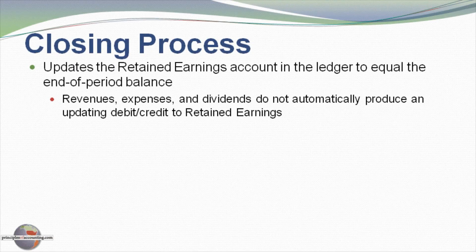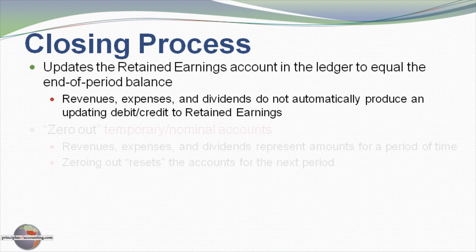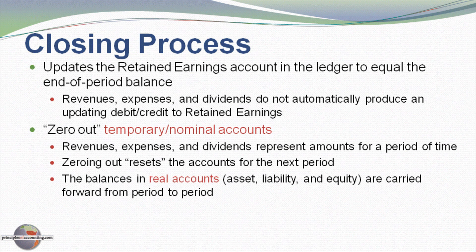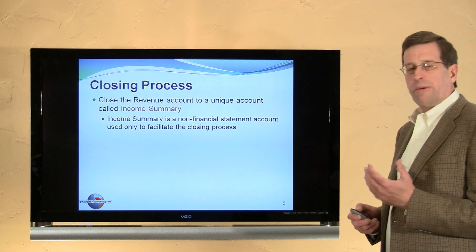We need to update the retained earnings account in the general ledger to equal the end-of-period balance. We do that by periodically closing our revenue, expense, and dividend accounts — that is, we zero those out. The revenue, expense, and dividend accounts are called temporary or nominal accounts, in contrast to the balance sheet accounts that are referred to as real accounts.